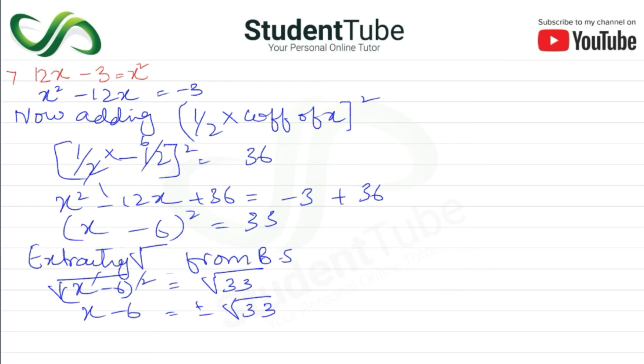x - 6 = +√33, or x - 6 = -√33. Therefore, x = 6 + √33 in the first case.